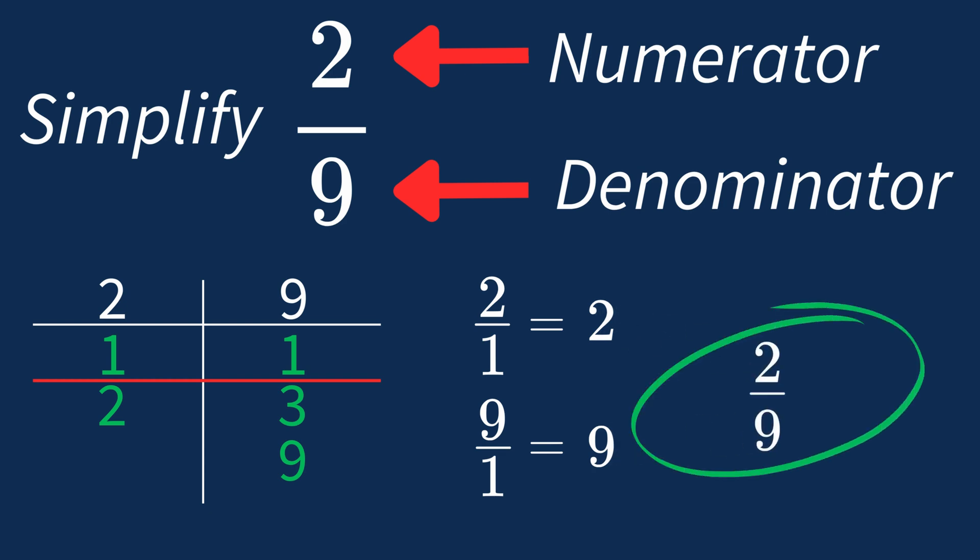This shows us that 2 over 9 is already in its simplest form. There's no larger number that can divide both parts evenly. So 2 over 9 is an irreducible fraction, meaning it's as simple as it can get.